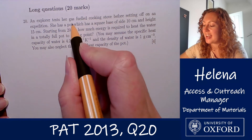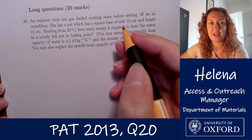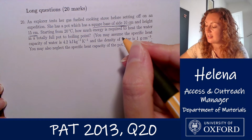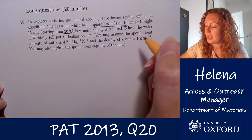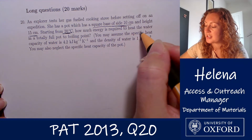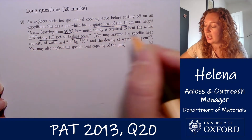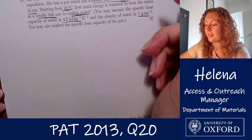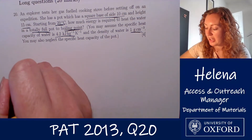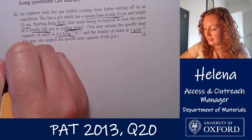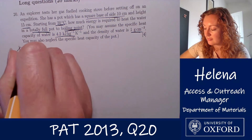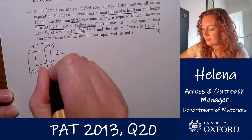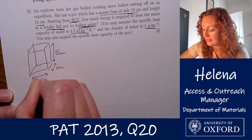We have an explorer who is testing her gas-fueled cooking stove before setting off on an expedition. She has a pot which has a square base of side 10 centimetres and a height of 15 centimetres. Starting from 20 degrees C, we're being asked to find how much energy is required to heat the water in a totally full pot to boiling point. We have a pot with this square base — it is slightly taller than it is wide — with a height of 15 centimetres and a base with lengths 10 centimetres.